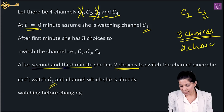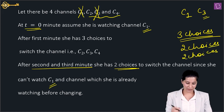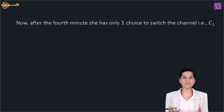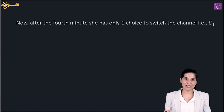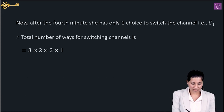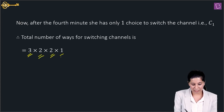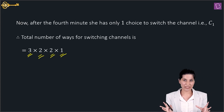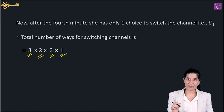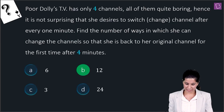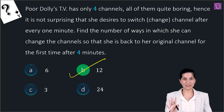So the choices are: 3 choices after minute 1, 2 choices after minute 2, 2 choices after minute 3, and 1 choice after minute 4 (must return to C1). Since she has to change every minute — 'and' means multiplication — total ways = 3 × 2 × 2 × 1 = 12 ways. Option B is the correct answer.